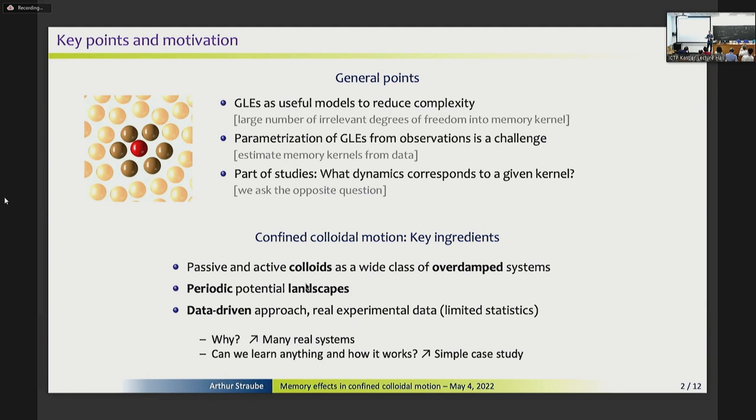So there are many studies which look at exactly the opposite problem when you have either a combination of memory kernel, for instance, exponentials like in the viscoelastic medium and how you can fit the given experimental data. So here I want to really focus on the question if you are given a set of experimental data or just simulation data and the statistics can be limited, how you can extract the memory kernel out of it. So the basic ingredients of our system are passive or active colloids, which means that they are overdamped, then periodic potential, and this means that you have some periodicity along one direction or in many directions, and the approach is data-driven.